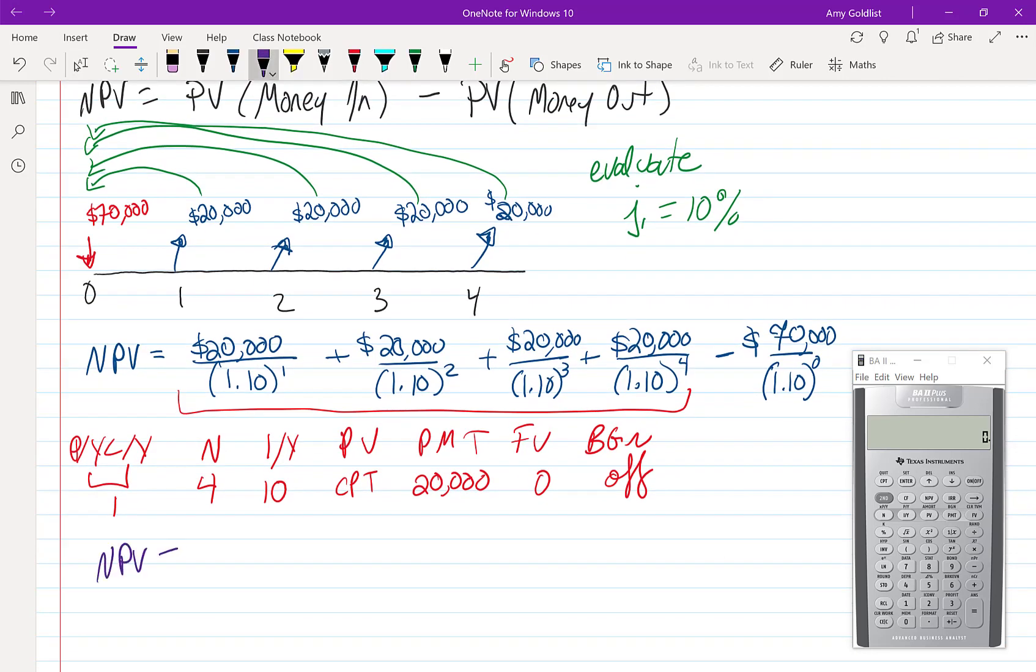Here, once I dump this into my calculator, and I would love for you guys to do this at the same time, pause, try it. I get $63,397.31. I'm going to subtract that $70,000, and I end up with a net present value of negative $6,602.69.